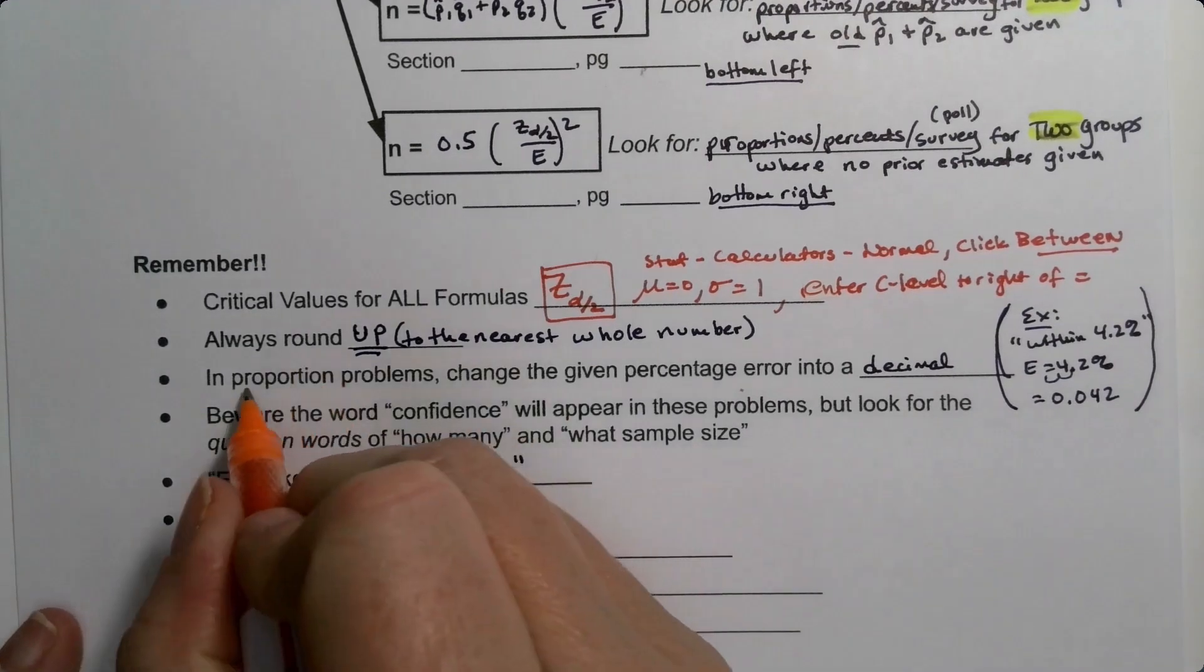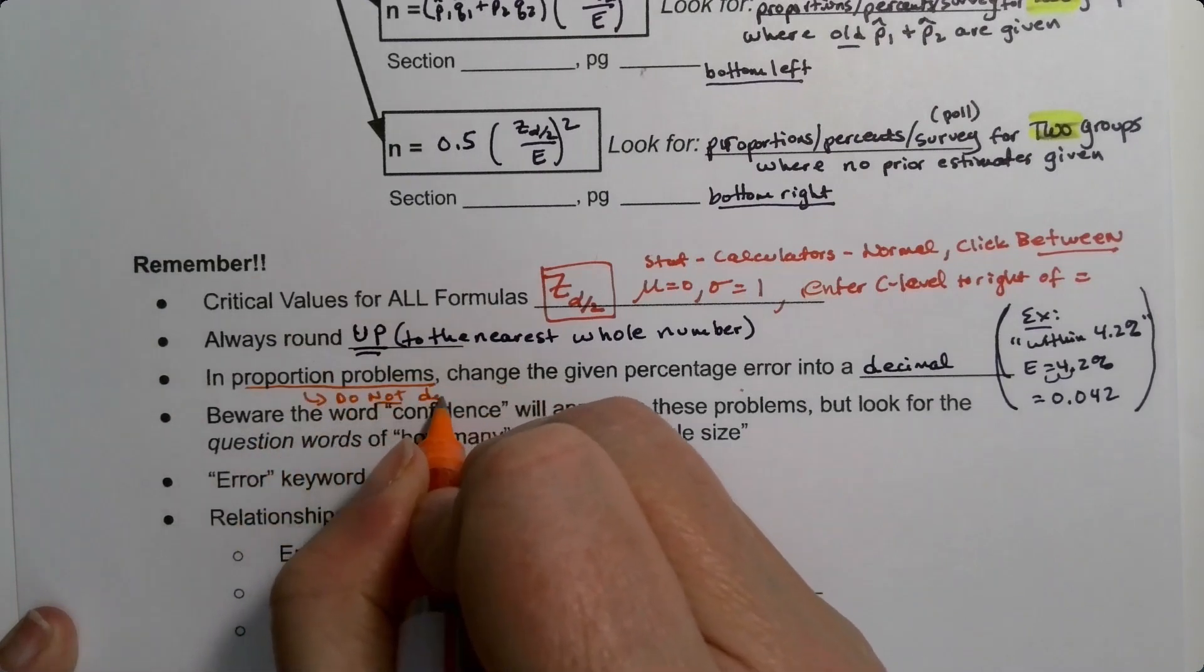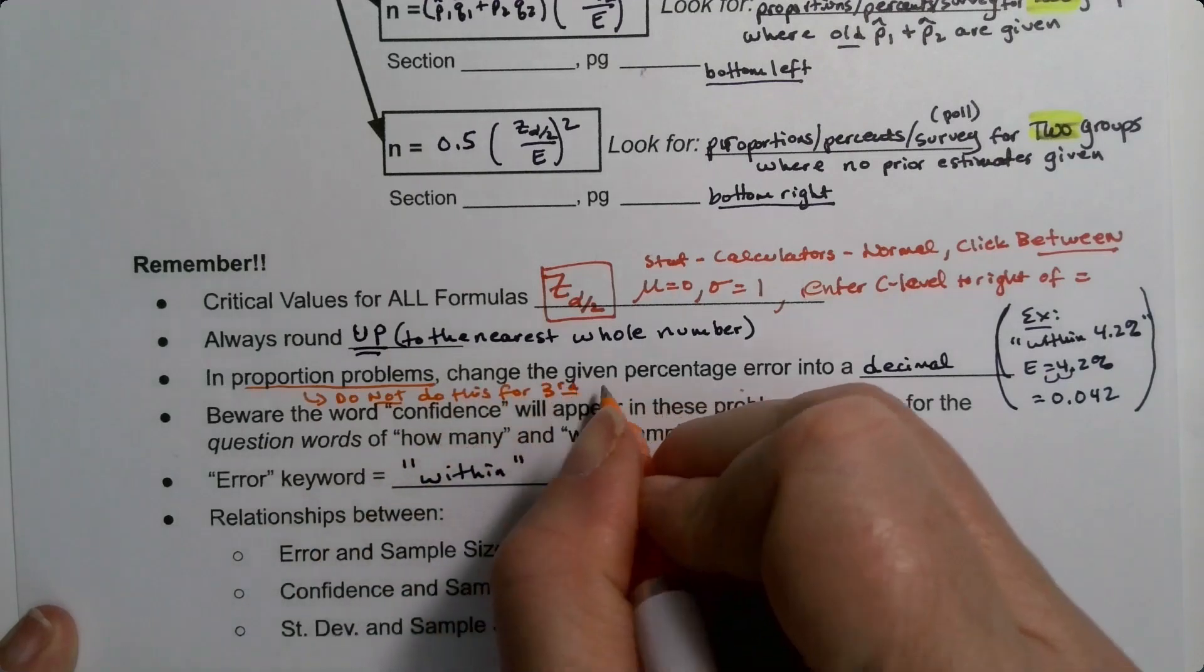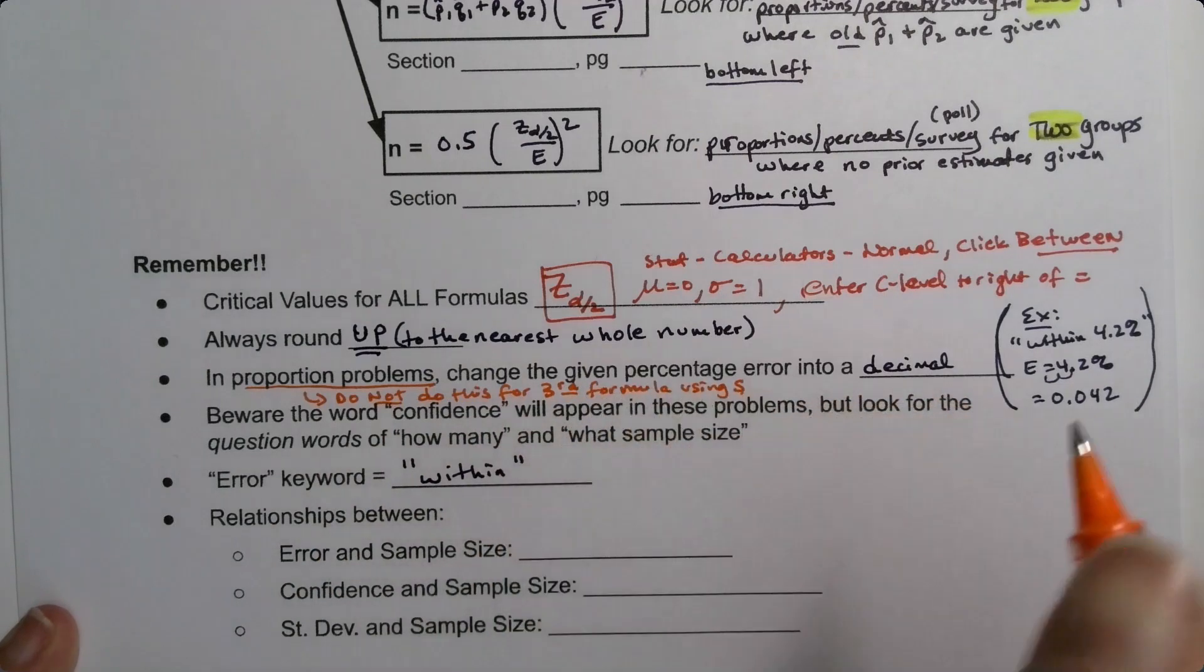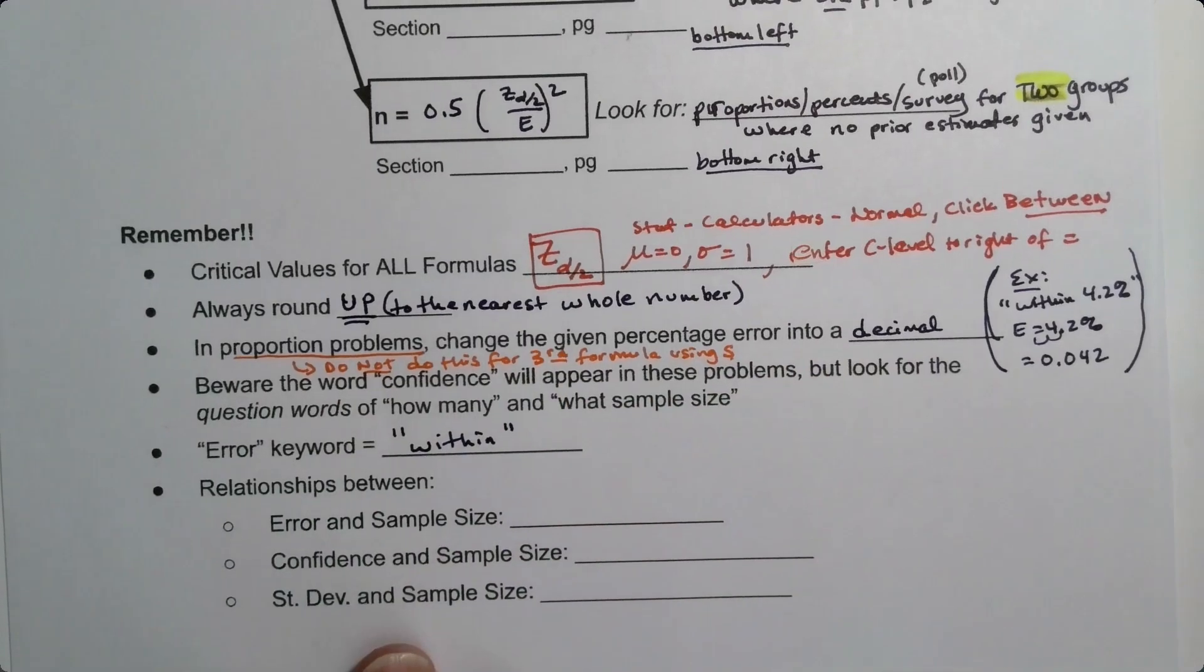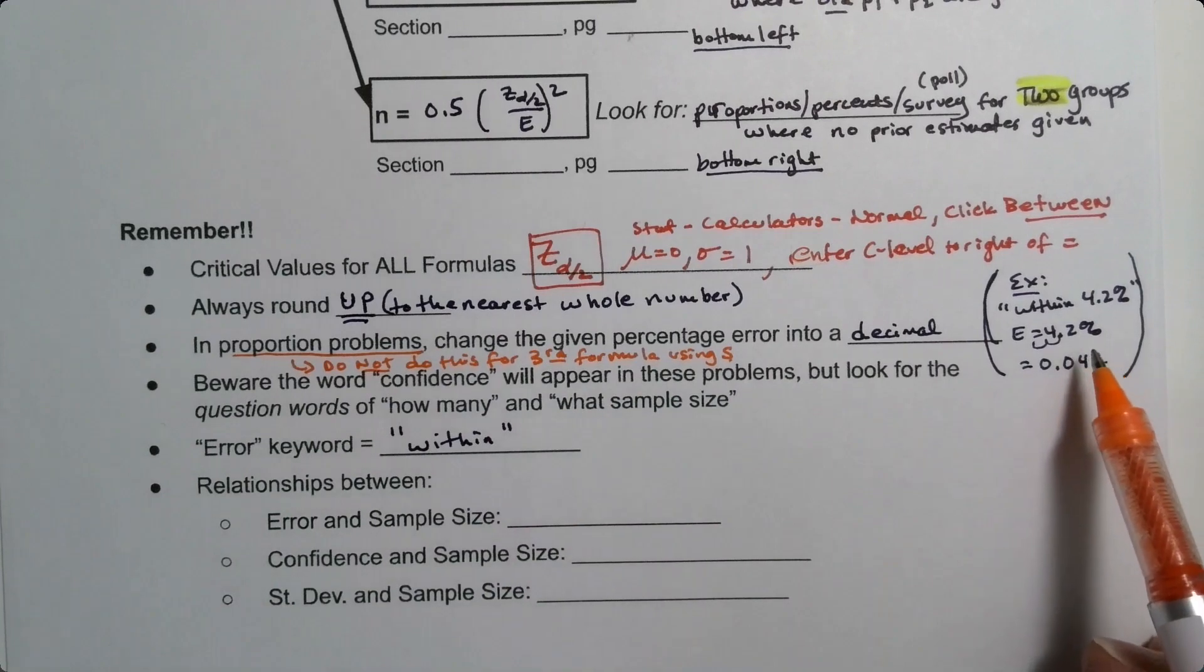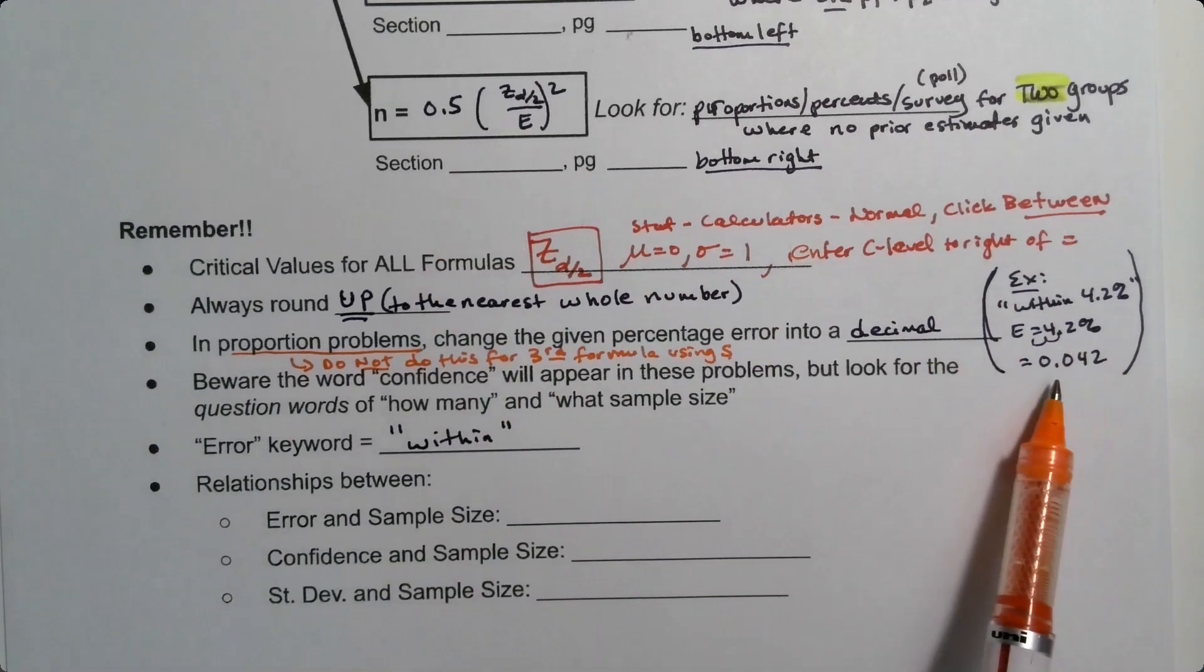But we want to make sure we note that this is only for proportion problems. Do not do this for the mean problem. I'll just say for the third formula using S, because that's what makes that formula special, is that it uses the standard deviation. So do not change this error given to a decimal. Don't move the decimal places in it. You only do that for percents, because percents are actually not useful in mathematics. They're useful for talking about mathematics, but they're not useful for formulas.